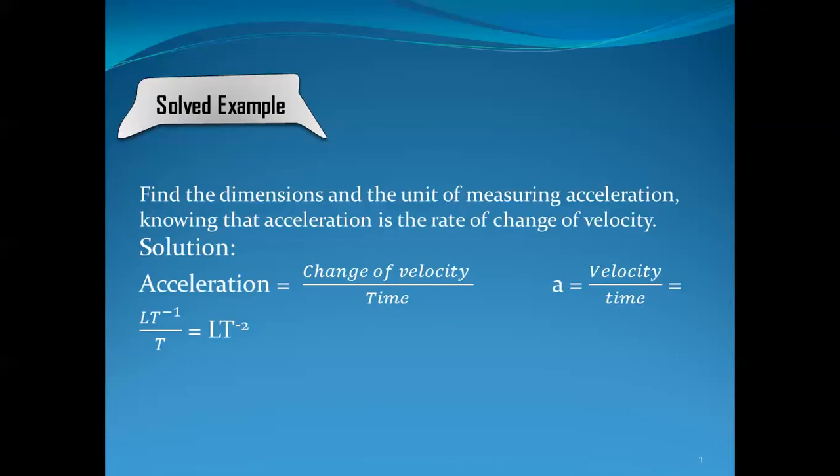When time moves to the numerator, you change the sign of its power. So L·T⁻¹ divided by T gives T to the power negative one plus negative one, which equals negative two. Therefore, the dimensional formula of acceleration is L·T to the power negative two.